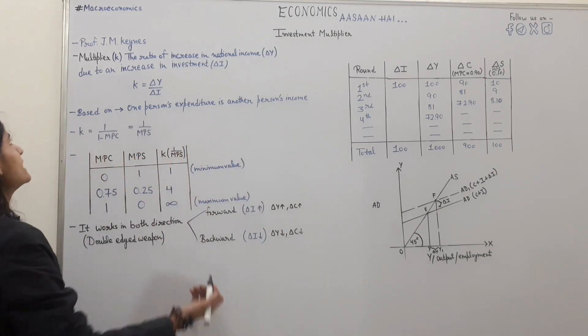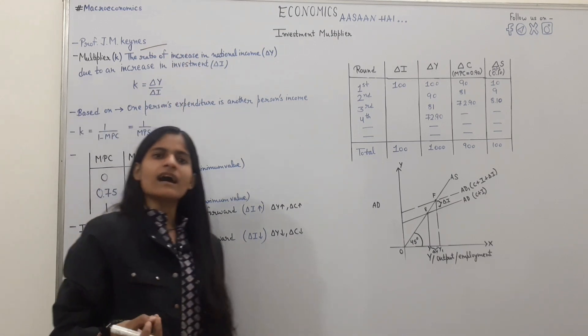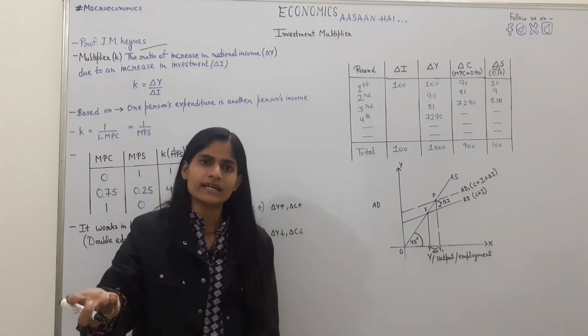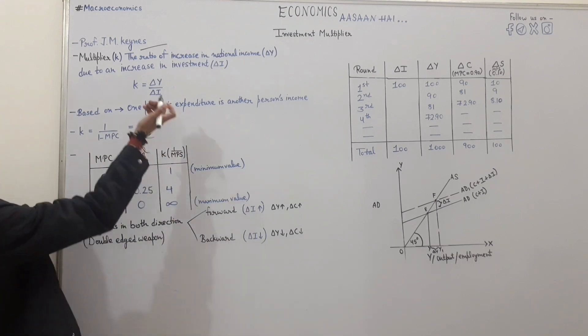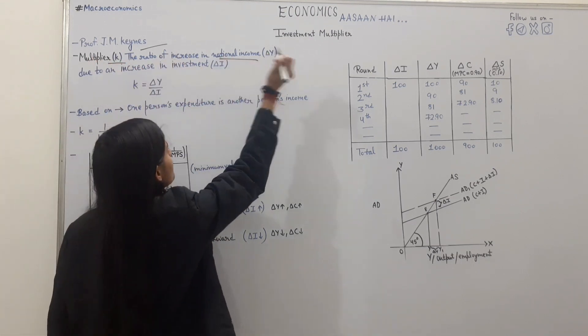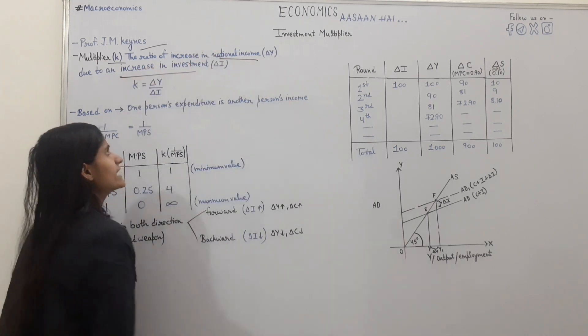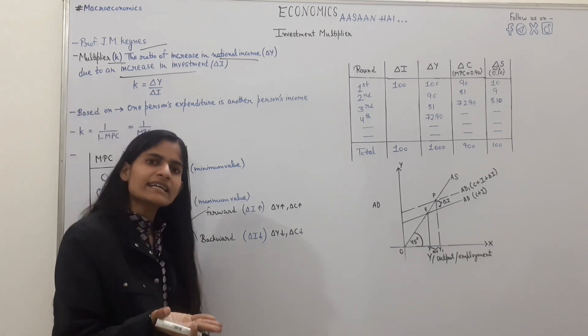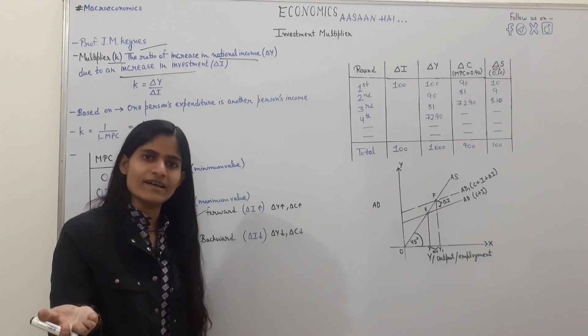We will understand the concept of investment multiplier. We have given the concept of investment multiplier and told them that if we increase the rate of investment, then it will increase multiple times in the economic order.